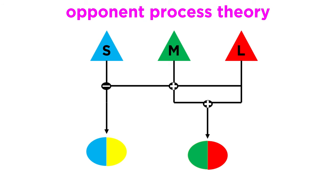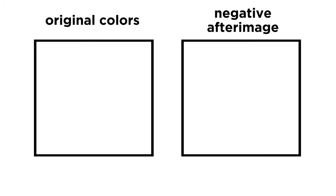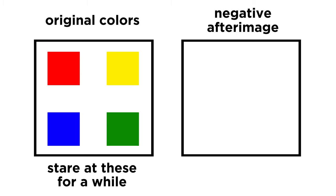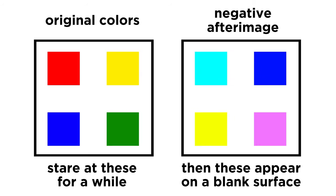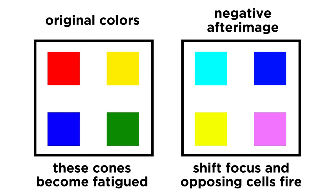This can be combined with opponent process theory, which outlines opponent systems that describe how the cones connect to the ganglion cells. In this model, a combination of excitatory and inhibitory responses controls what color combinations can be seen. A ramification of this mechanism is the notion of the negative afterimage that can be seen after staring at something for an extended period of time, whereby the afterimage is always the complementary color. This is because staring at something of a particular color will cause certain cones to become fatigued, while others do not fire at all, so when shifting focus to a blank surface, only the opposing cells will fire.